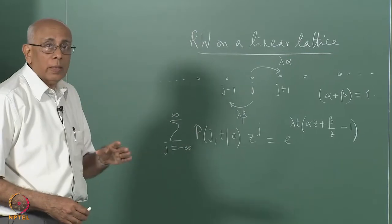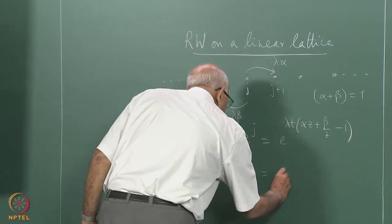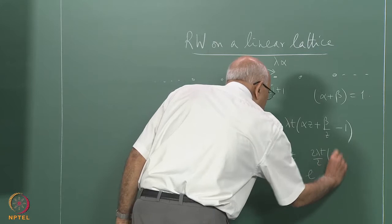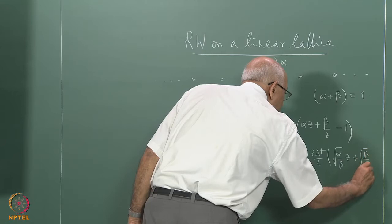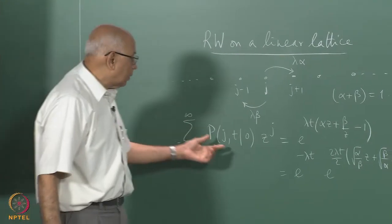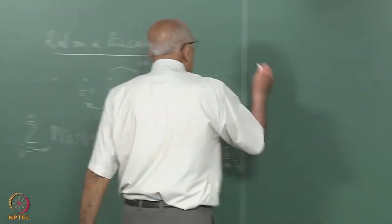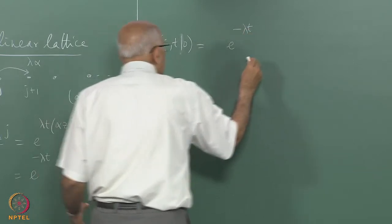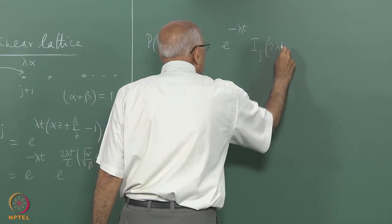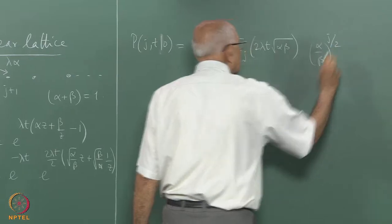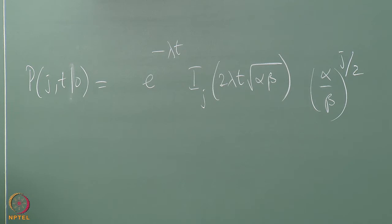From this, the mean values and the solution itself could be written down. The generating function was e to the minus lambda t, and then we could write the rest as e to the 2 lambda t over 2 times square root of alpha over beta times z plus square root of beta over alpha times 1 over z. That helped us immediately identify p of j, t as a certain Bessel function. So the solution p of j, t starting from the origin equals e to the minus lambda t times the Bessel function I_j of 2 lambda t times square root of alpha beta, times (alpha over beta) to the power j over 2.